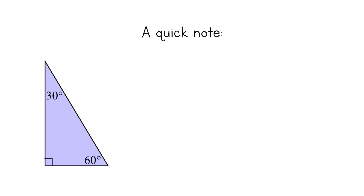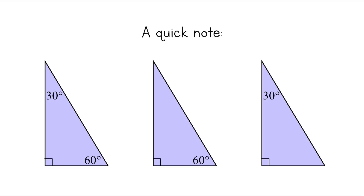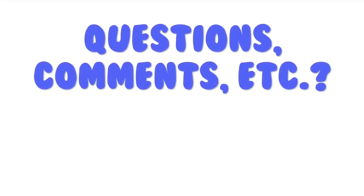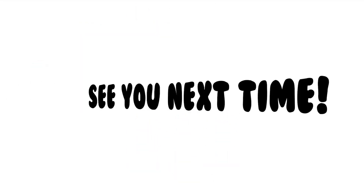A quick note about 30-60-90 triangles: if you only see a 30 degree angle or only a 60 degree angle labeled, that's the same thing, because a triangle always has 180 degrees and you can find the last angle by subtraction. And that's it for special right triangles. I hope you learned something new today. If you have any questions, comments, or videos you want to see, feel free to drop a comment below, and I'll see you next time.